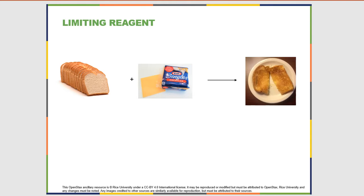In previous examples of stoichiometry we looked at examples where one reagent was used in excess and we automatically knew what is called the limiting reagent. So now we want to talk about what a limiting reagent is, and one way we can do that is by thinking about something a little more practical than chemicals — but you'll find out soon that it works the exact same way for chemicals.